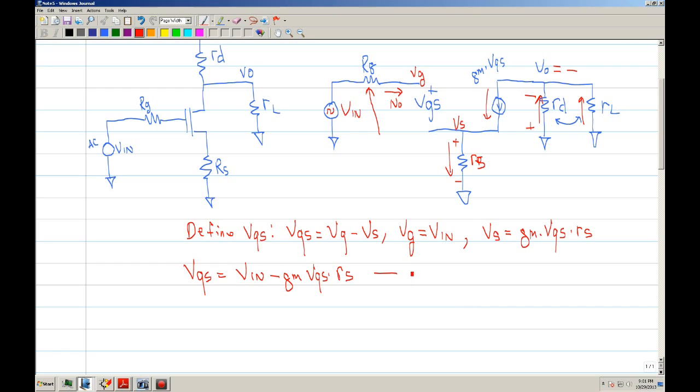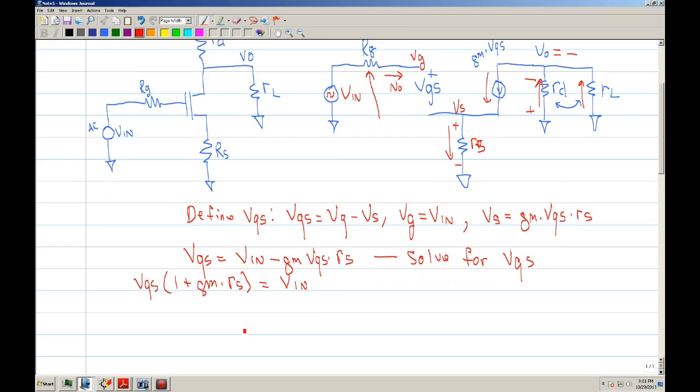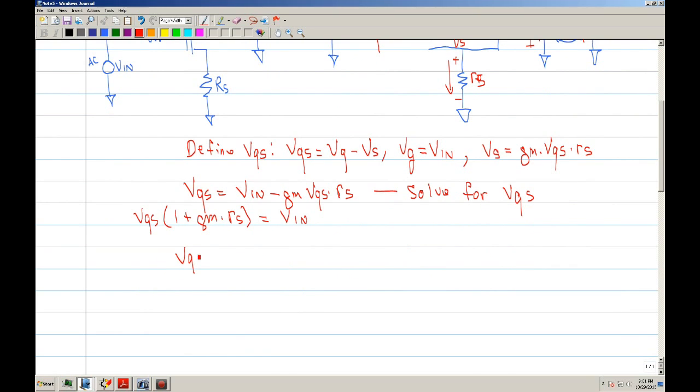So we need to solve for VGS. So we bring this to the other side. So we should have VGS times one plus GM RS divided by VN. So you should get VGS equals VN divided by one plus GM RS. So now we have it defined properly.